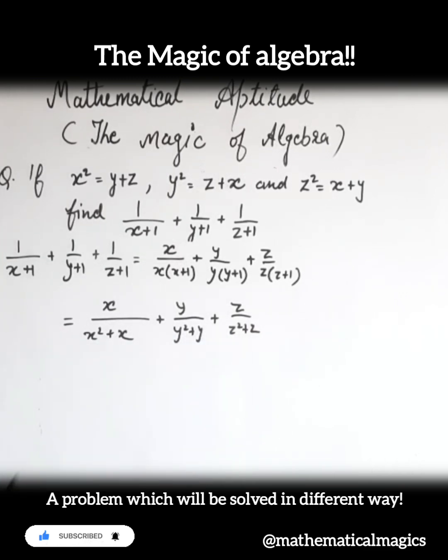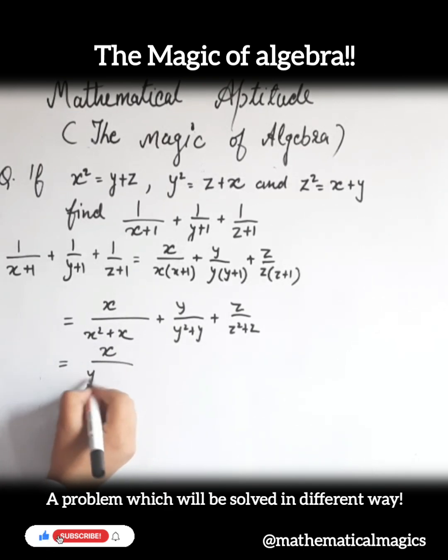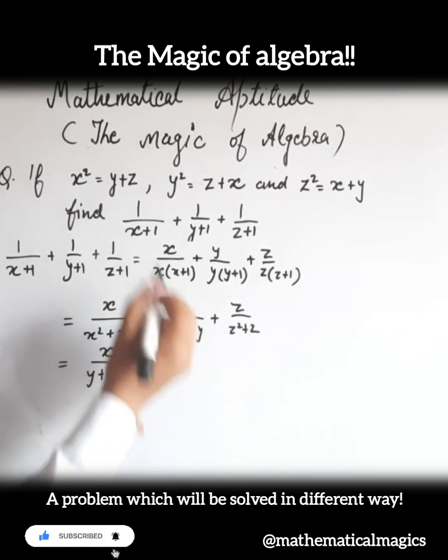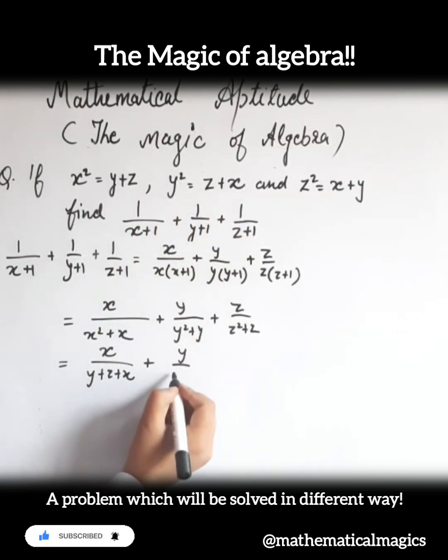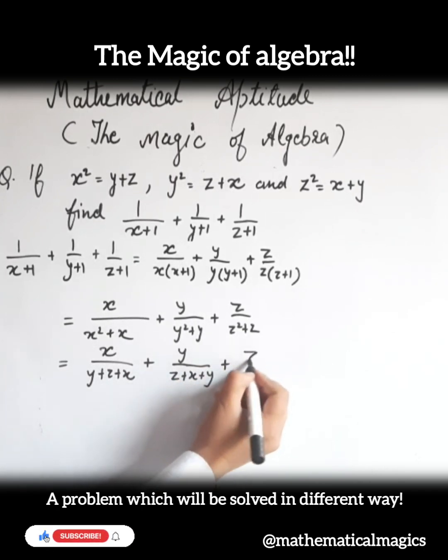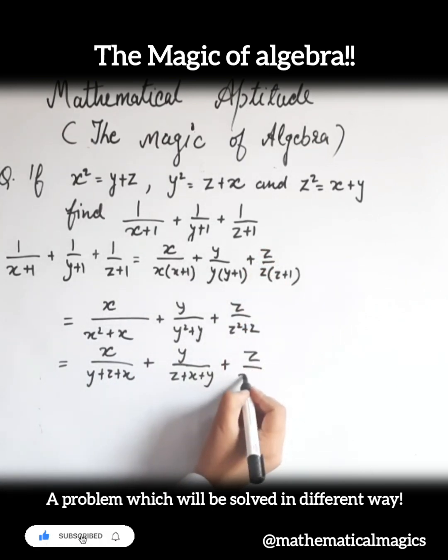Then, x square is equal to y plus z. Replace it. What will happen? x upon y plus z plus x, plus y upon z plus x plus y, plus z upon x plus y. So, it becomes x plus y plus z.